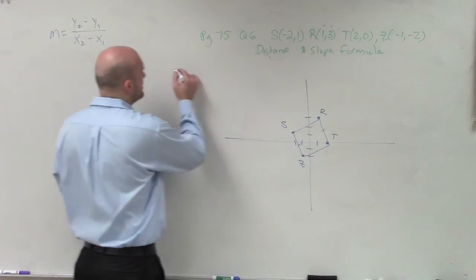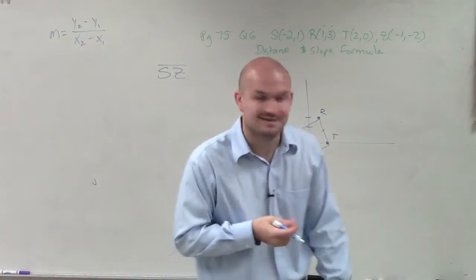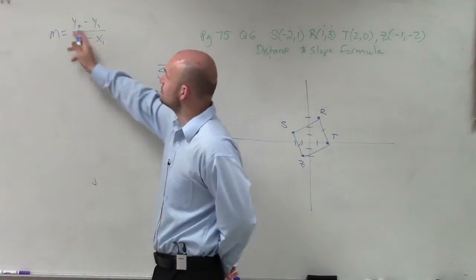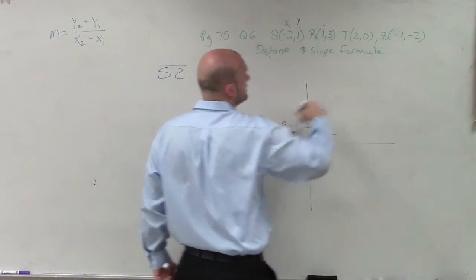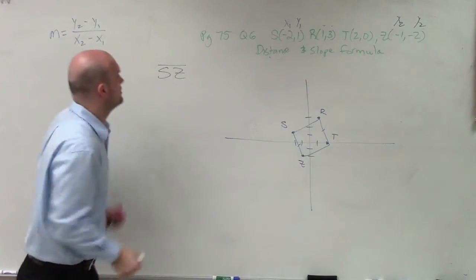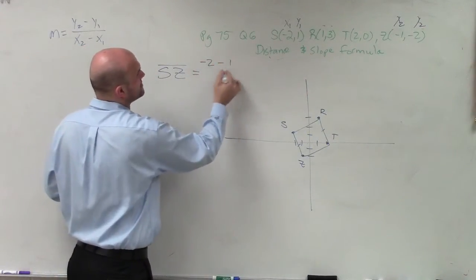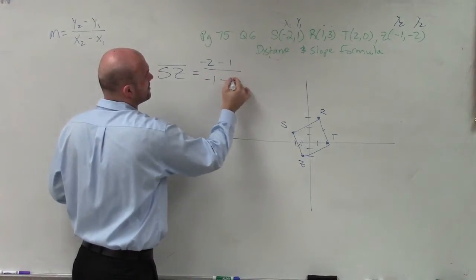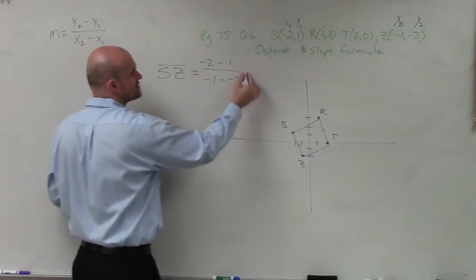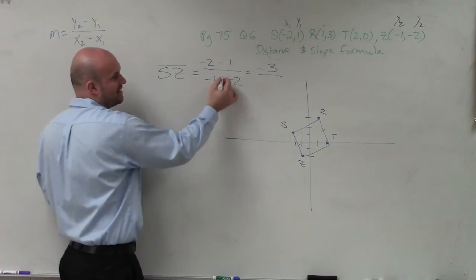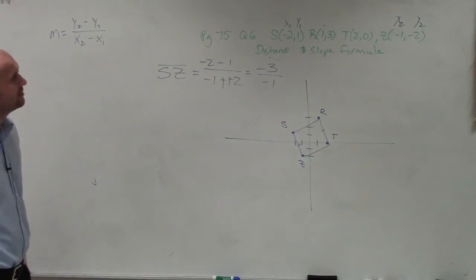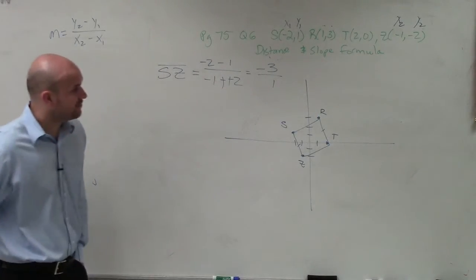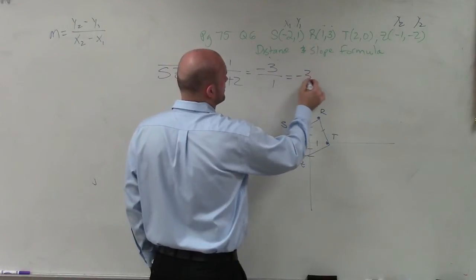So what I'm going to do is determine the length of SZ, not ST, SZ. So remember, the slope formula is y2 minus y1 divided by x2 minus x1. So to determine SZ, I'm just going to label my points x1, y1, and z, x2, y2. So to find the slope, here I'll have negative 2 minus 1 divided by negative 1 minus a negative 2. Well, negative 2 minus 1 is going to be a negative 3. A minus a negative, that becomes positive. Negative 1 plus 2 will just become negative 1. Would that be positive 1? Yeah, it would be positive 1. Thank you. So therefore, that's going to have a slope of negative 3, right?